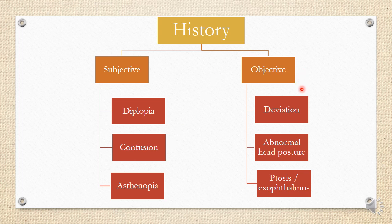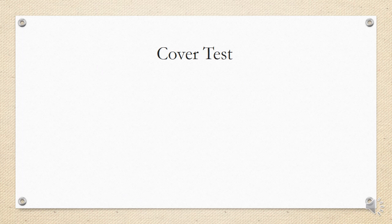For objective history, we look for deviation, abnormal head posture, ptosis, or exophthalmos. We also note any previous ocular problems or treatments, such as retinal surgery, any general health debility, severe or viral infections, family history of similar conditions, facial asymmetry, and any road traffic accidents that may have led to the condition.